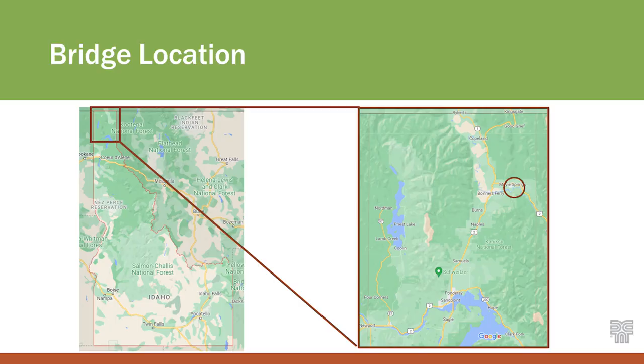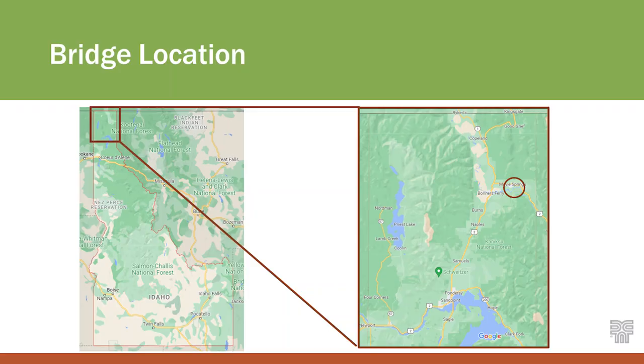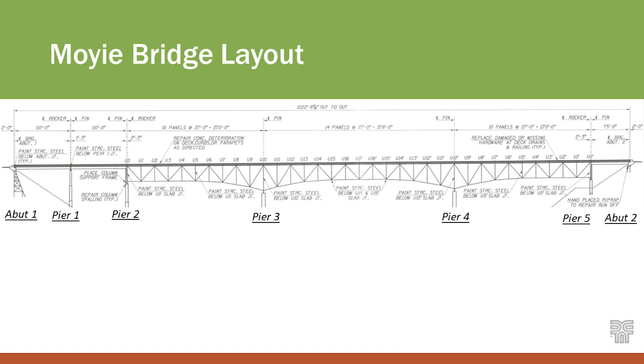The Moyet Bridge is located in the Panhandle of Idaho on US 2, servicing the local communities of Moyie Springs and Bonners Ferry. It's a major truck route in northern Idaho and crosses over the Moyet River Canyon, which is about 300 feet deep. The truss span crosses over the canyon connected with steel end spans — the end spans are 270 feet and the main span is approximately 380 feet.